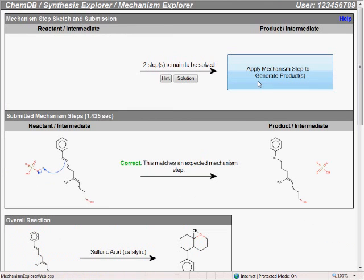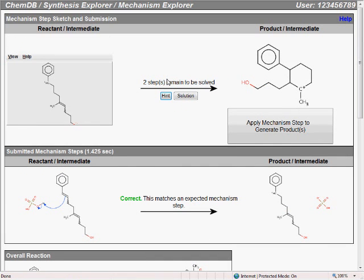If you get stuck on any of the mechanism problems, similar to the synthesis problems, you can always just ask for a hint. This will load the next expected step's reactants into the sketcher, and also show you a picture of the expected products that would result after the mechanism step. All you have to do then is draw the arrows on the reactants that will lead to the expected product shown.